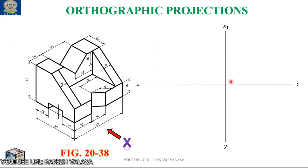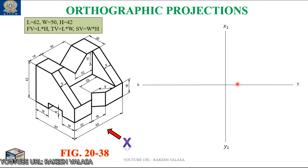These two reference lines are perpendicular to each other. First, we need to identify the three positions — that is the front view position, top view position, and side view position. The next step is to note the total length, total width, and total height for the given pictorial figure. Here the total length is 62 mm, width is 50 mm, and total height is 42 mm. These three dimensions are directly given in the figure.